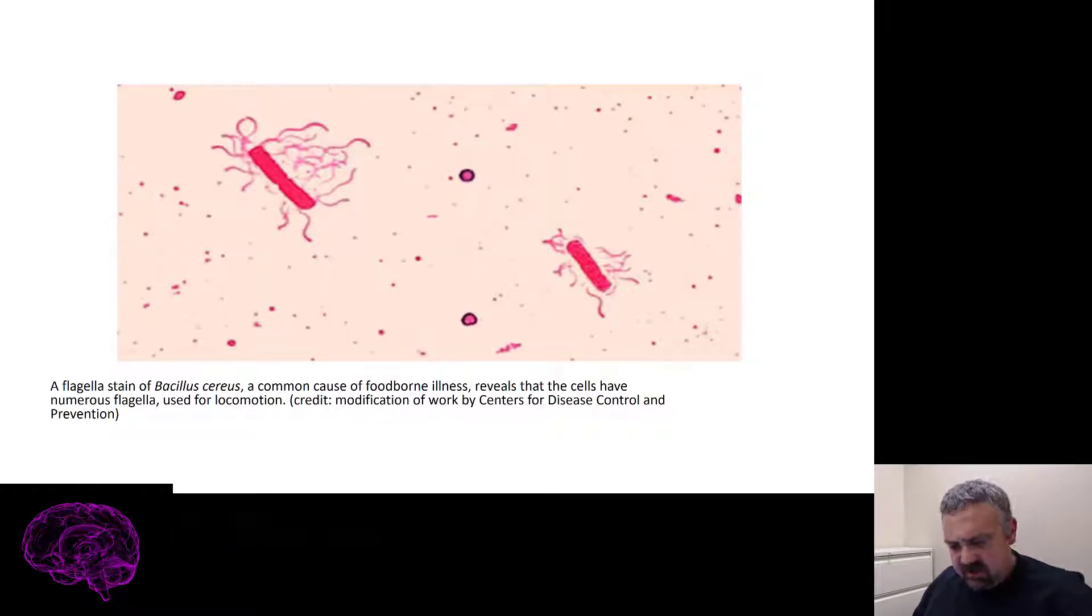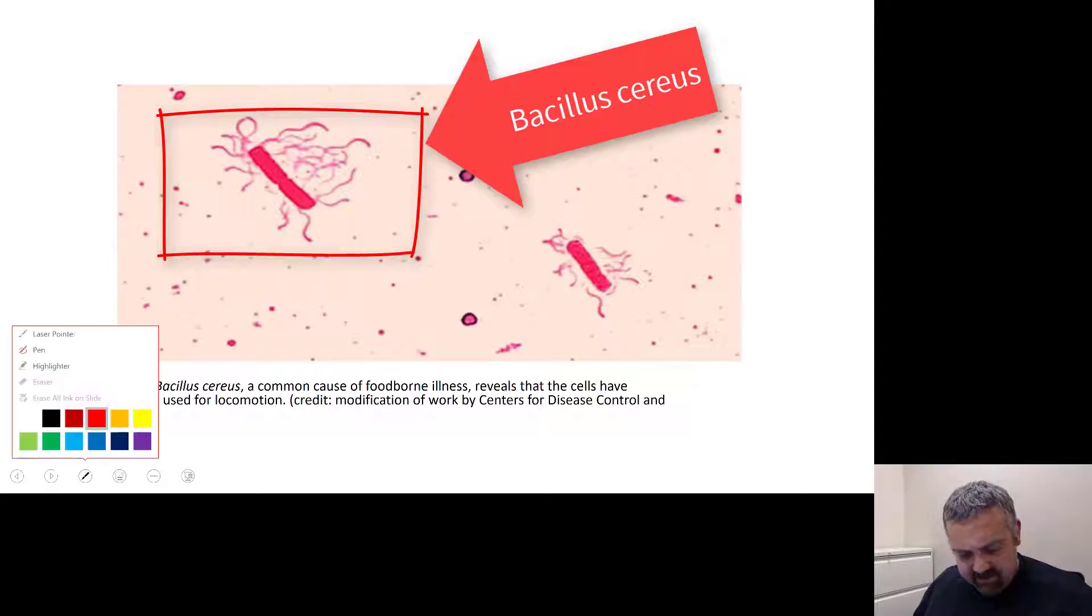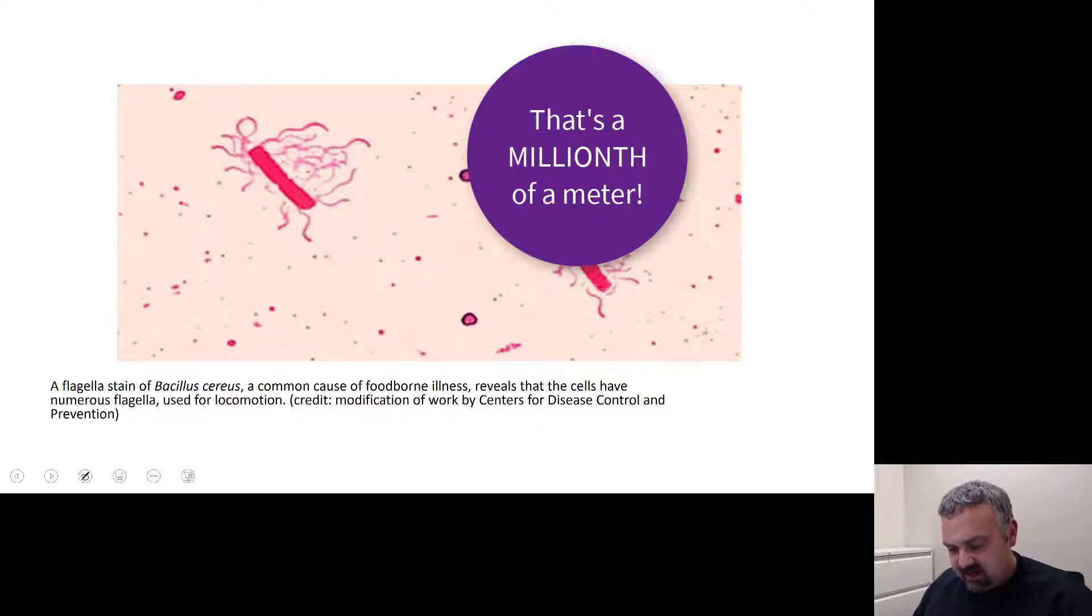Have you ever thought about how a microscope works? Have you ever thought about how you can see this tiny microorganism? This, for example, is Bacillus cereus, probably one micrometer by three or four micrometers in size, and we can see it really well with a light microscope.